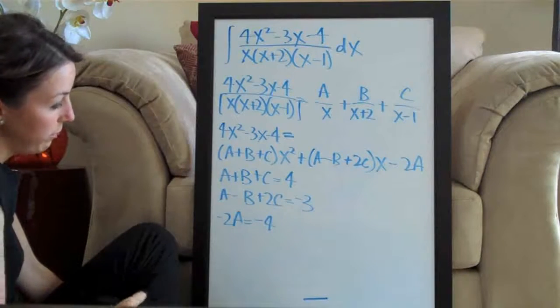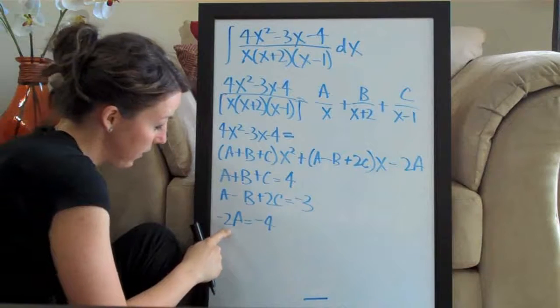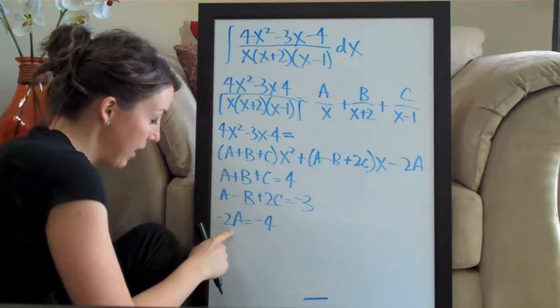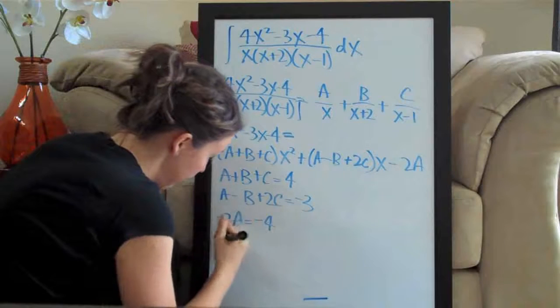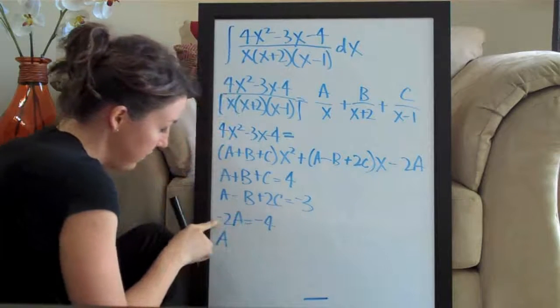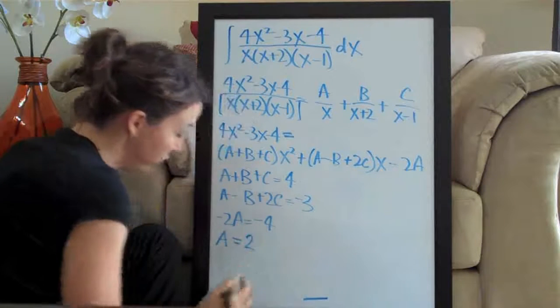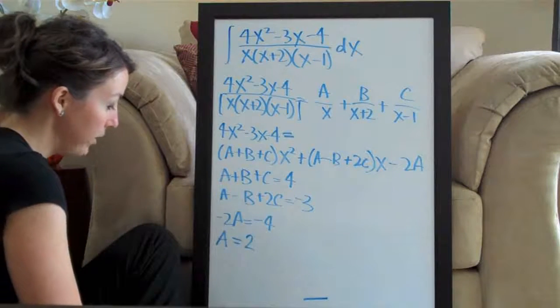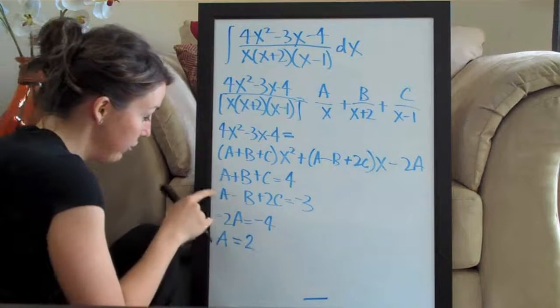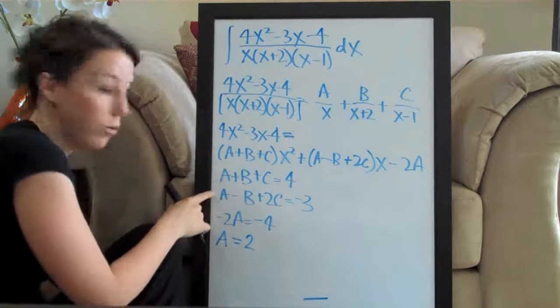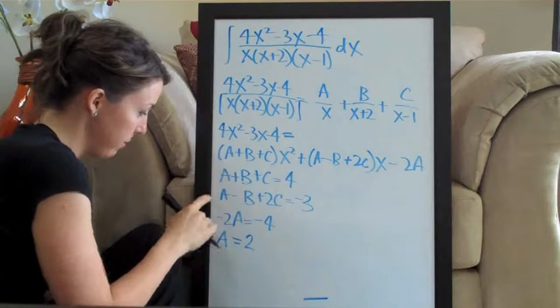We want to do this in the simplest way possible, so the first thing we can see immediately is that we can solve for a. We divide both sides of this third equation by negative 2 and we get a equals 2. So we can go ahead and plug 2 back in for a to these first two equations to make them simpler.